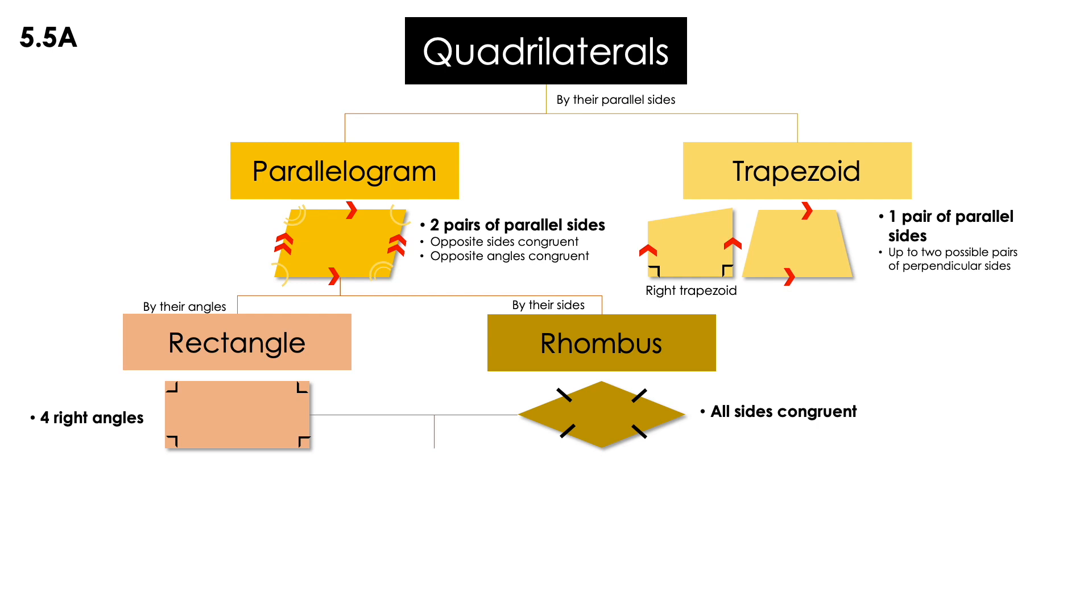And now, there's one shape that is a rectangle and a rhombus at the same time. I think you know this shape, right? This shape has four right angles, as the rectangle.